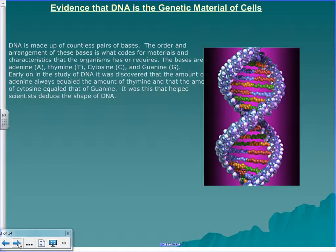DNA is made up of countless pairs of bases. The order and arrangement of those bases is what codes for materials and the characteristics that an organism has or requires. The bases are adenine, thymine, cytosine, and guanine — A, T, C, and G. Those are the four bases that make up DNA.